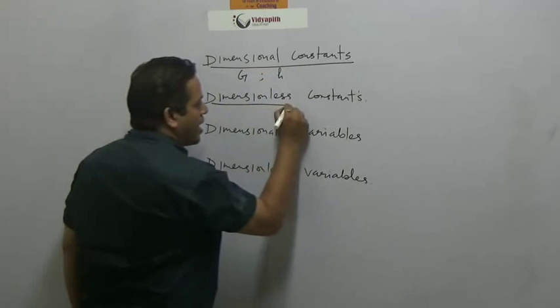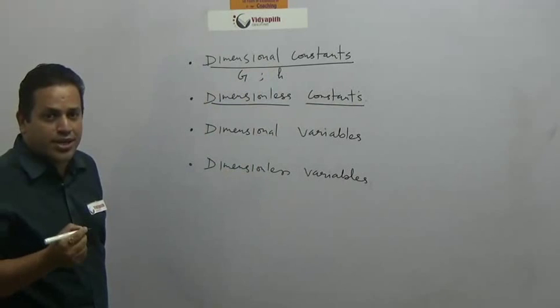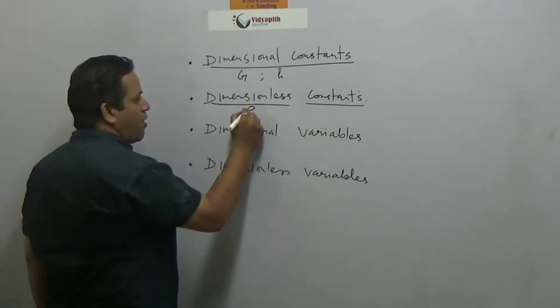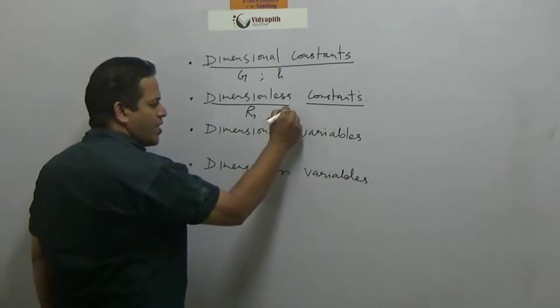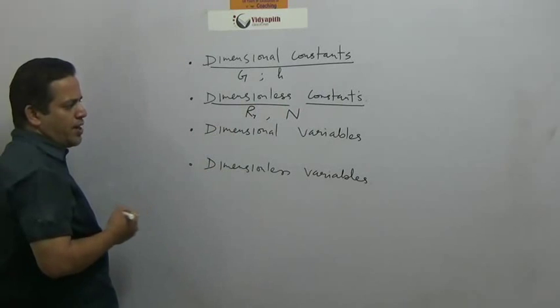Now, what are dimensionless constants? These should be constants but shouldn't have dimensions. So the examples are Reynolds number R and Avogadro number N. These are constants and have no dimensions.